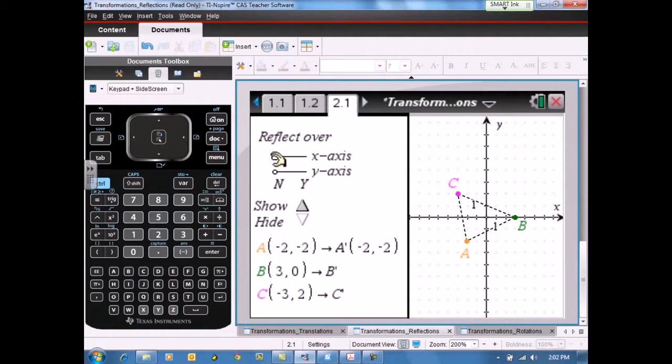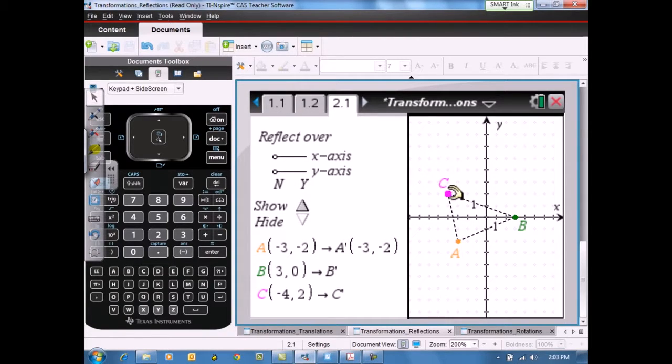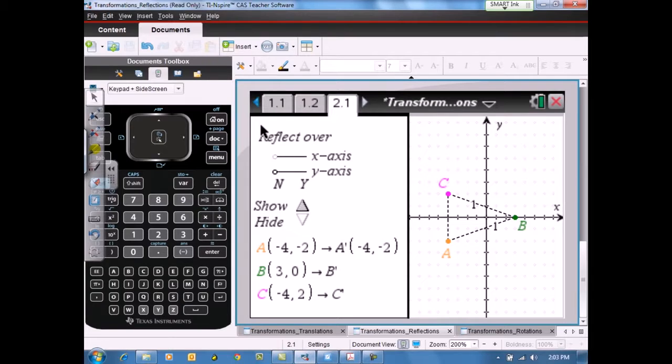One of the other Common Core State Standards learning objectives that deals with reflections and rotations in particular is having students create images that would map onto themselves over some reflection or map onto itself through some rotation. So how could we arrange the vertices of the pre-image? How could we move those vertices so that if we were to reflect this triangle over the X axis, the triangle will map onto itself? It will land on top of itself. The image and the pre-image are the same there. So I think that's a nice addition to that activity.